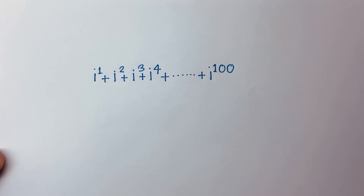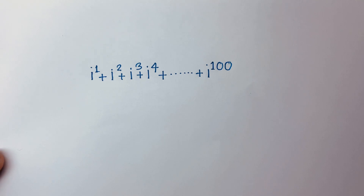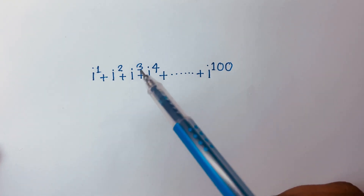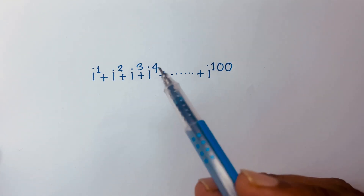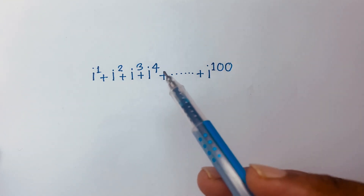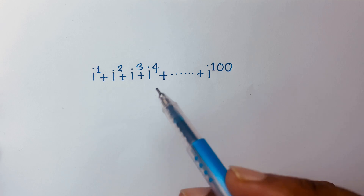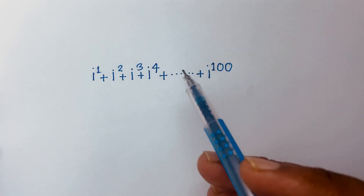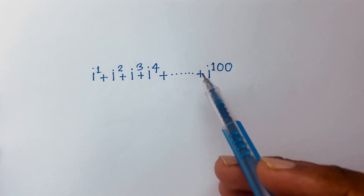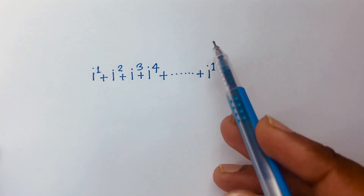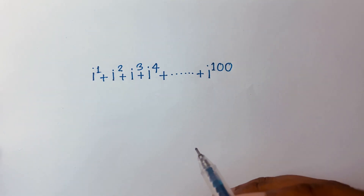Hello everyone. How to solve this i-series math question: i to the power 1 plus i squared plus i to the power 3 plus i to the power 4 plus, and at last, i to the power 100 — is equal to what?